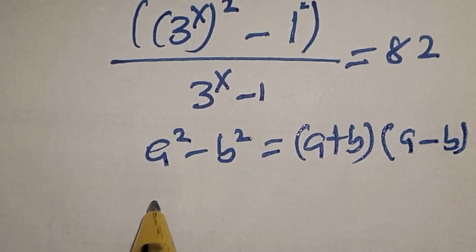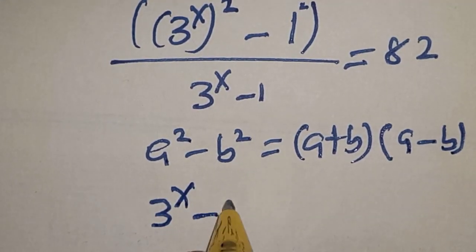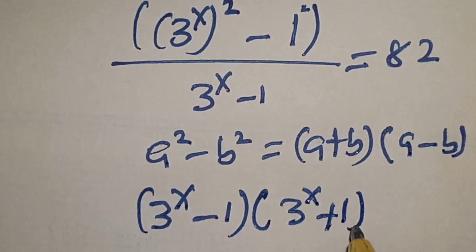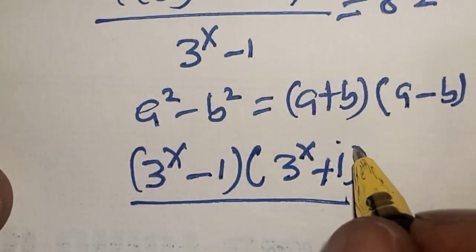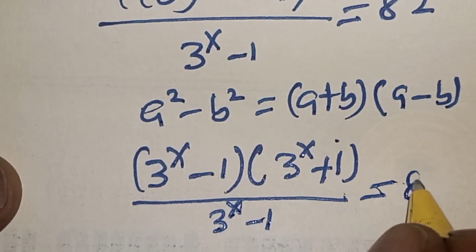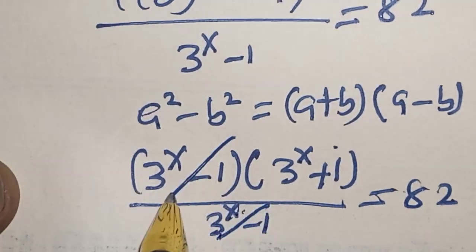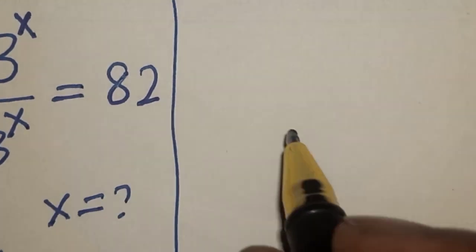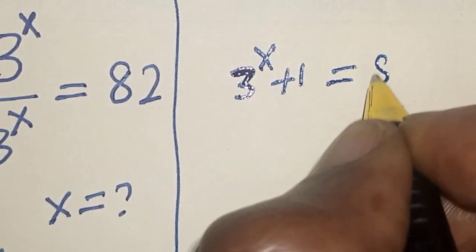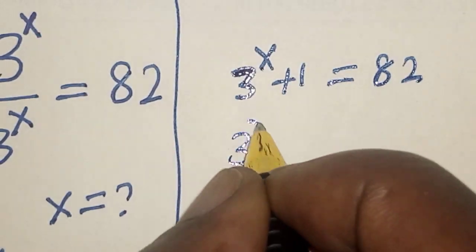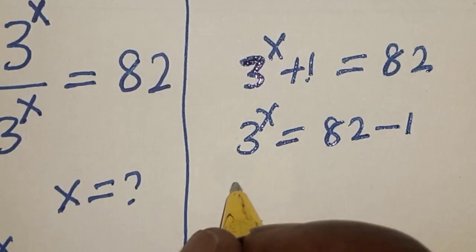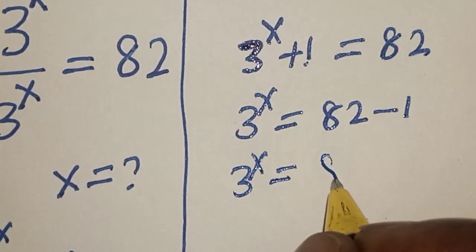Applying the difference of squares, we get: 3 raised to power s plus 1, multiplied by 3 raised to power s minus 1, divided by 3 raised to power s minus 1, is equal to 82. The 3 raised to power s minus 1 cancels, leaving 3 raised to power s plus 1 equals 82. Moving the plus 1 across gives 3 raised to power s is equal to 81.